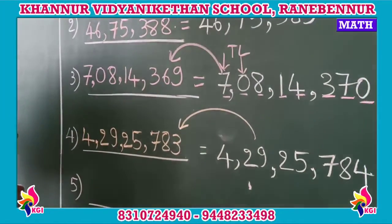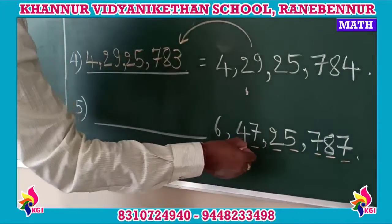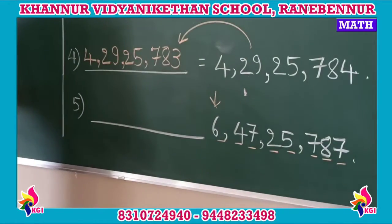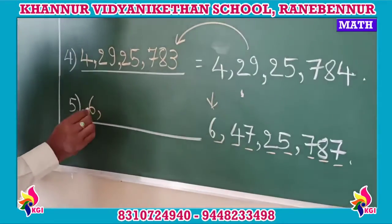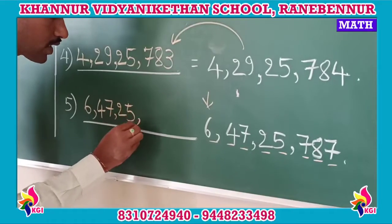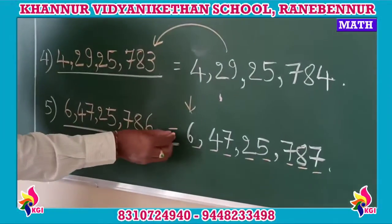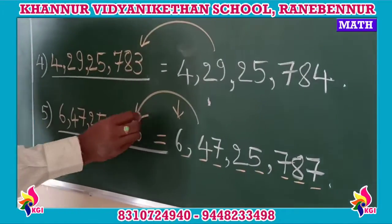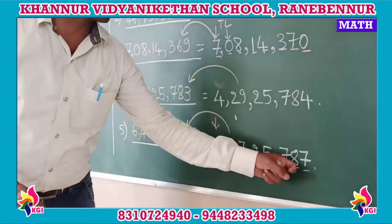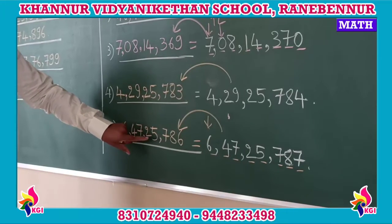The next number has 1, 2, 3, 4, 5, 6, 7, 8 digits — also an 8-digit number. 6 is in the crore place. The number is 6 crore, 47,25,787. The predecessor is 6 crore, 47,25,786.